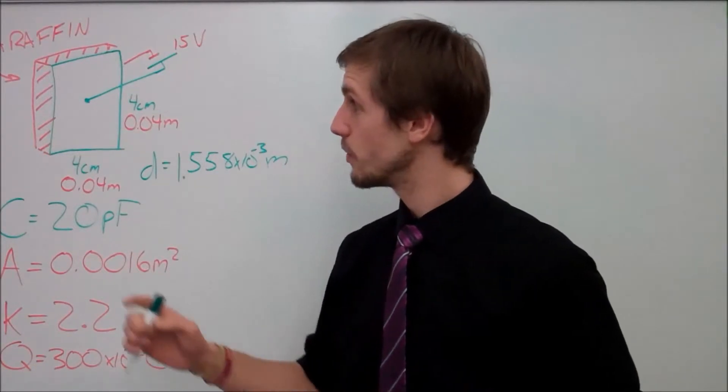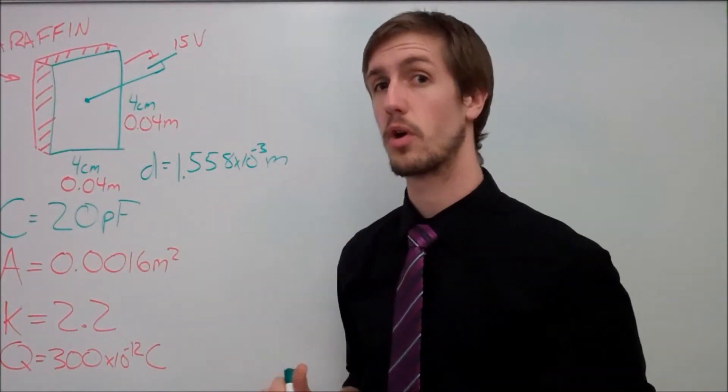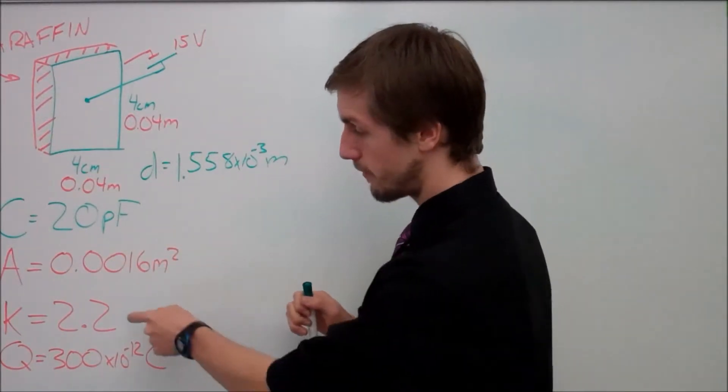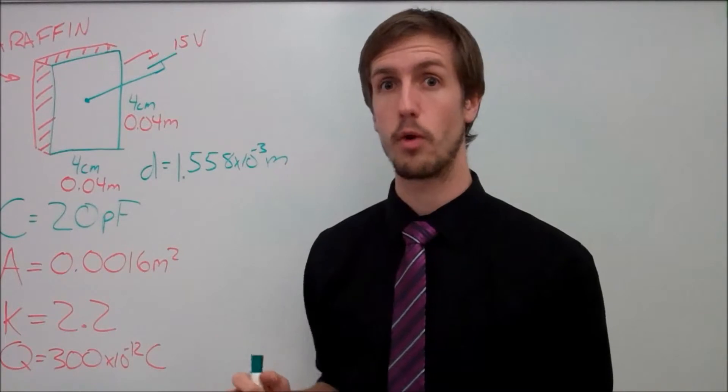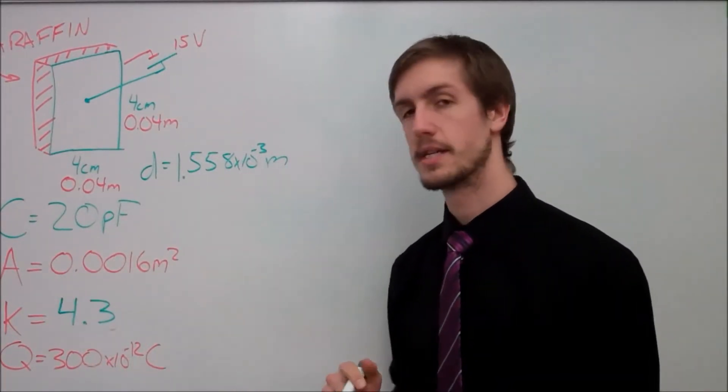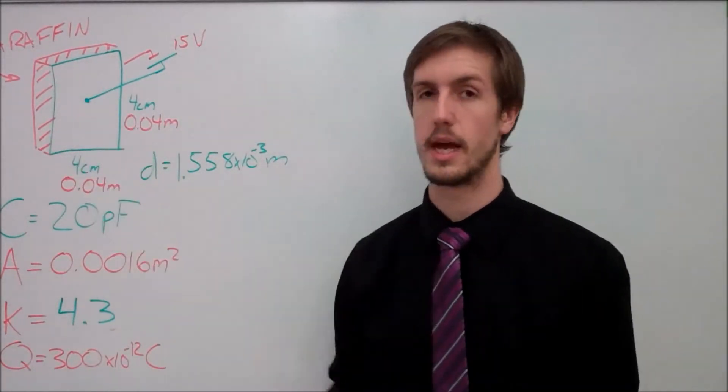Now in part D what's happening is we are taking out this paraffin filling. What we're going to do is we are going to replace it with a quartz plate. So our dielectric ends up becoming, instead of 2.2 it's going to switch to be 4.3. And it's asking us to find out what our charge density is, as well as it's also asking us to find out what our difference in potential is between one plate and the other.